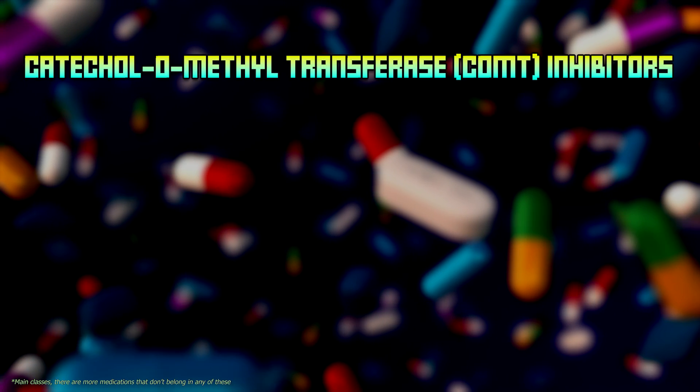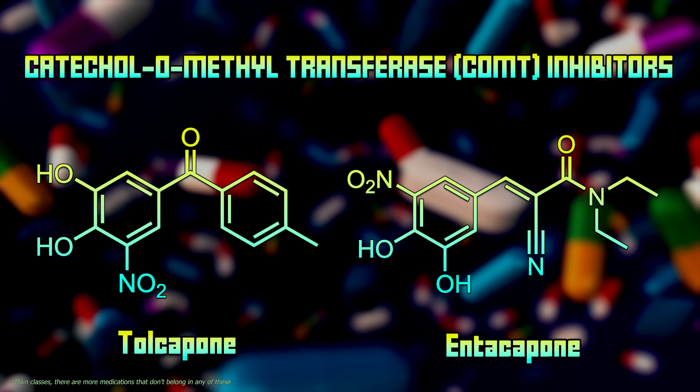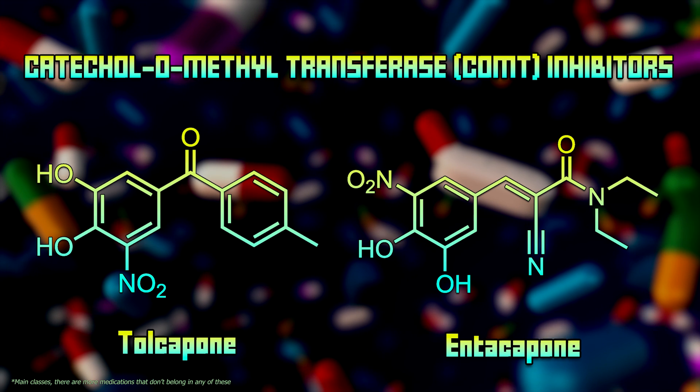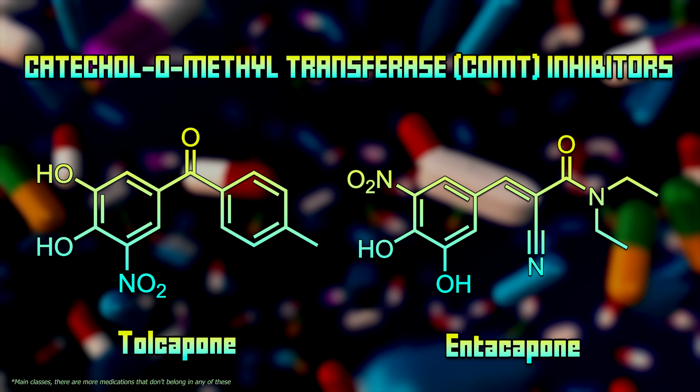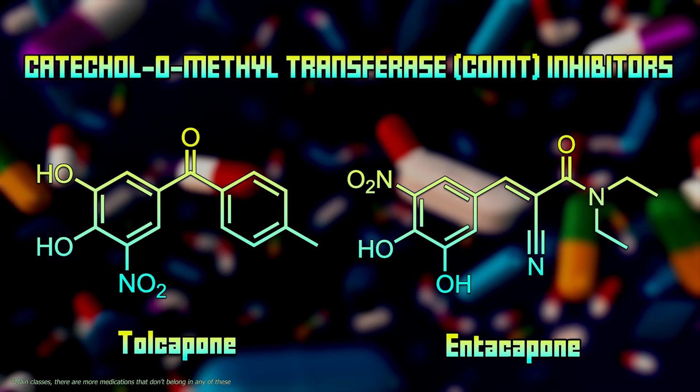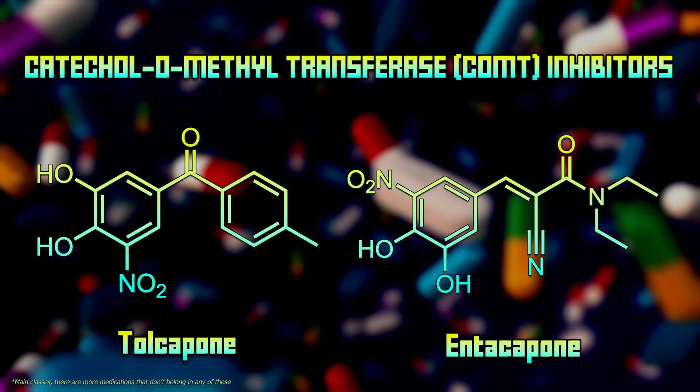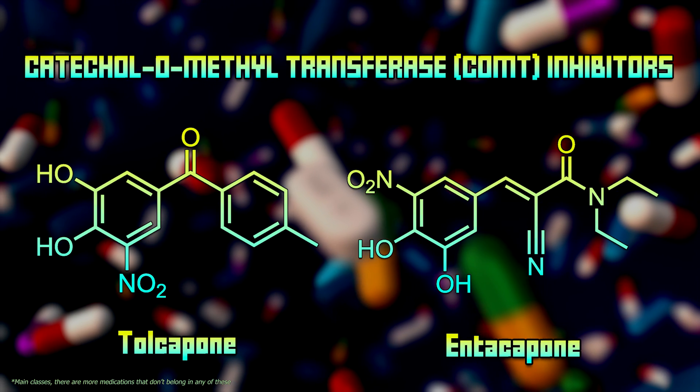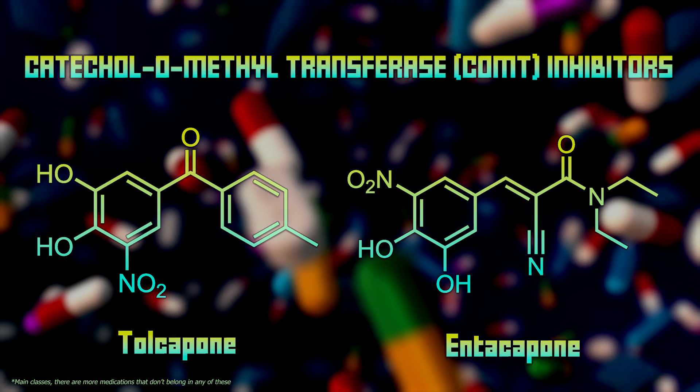The fourth type are catechol-O-methyltransferase inhibitors, or COMT inhibitors for short. These inhibitors block the enzyme catechol-O-methyltransferase, which metabolizes levodopa in the peripheral tissues. By inhibiting this enzyme, COMT inhibitors prolong the half-life of levodopa in the bloodstream, enhancing its effectiveness and reducing motor fluctuations.